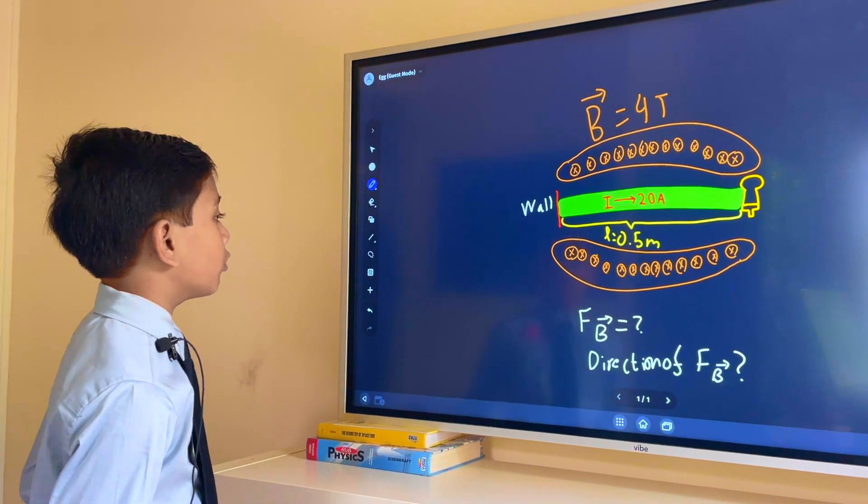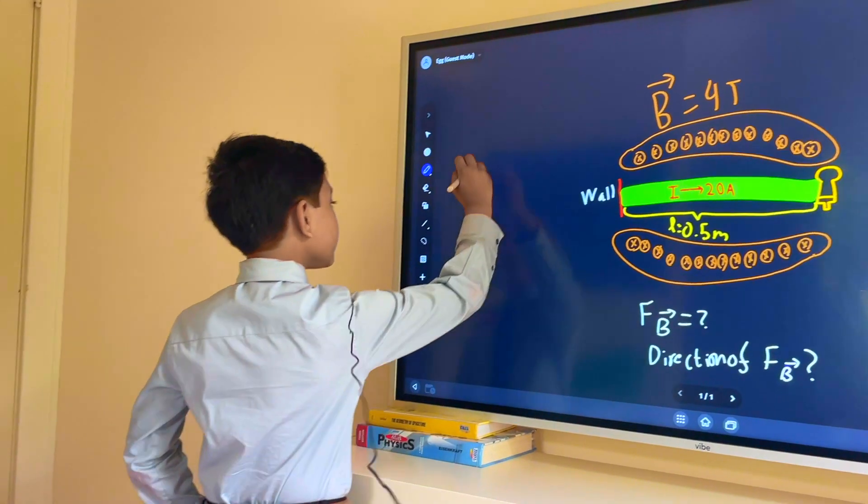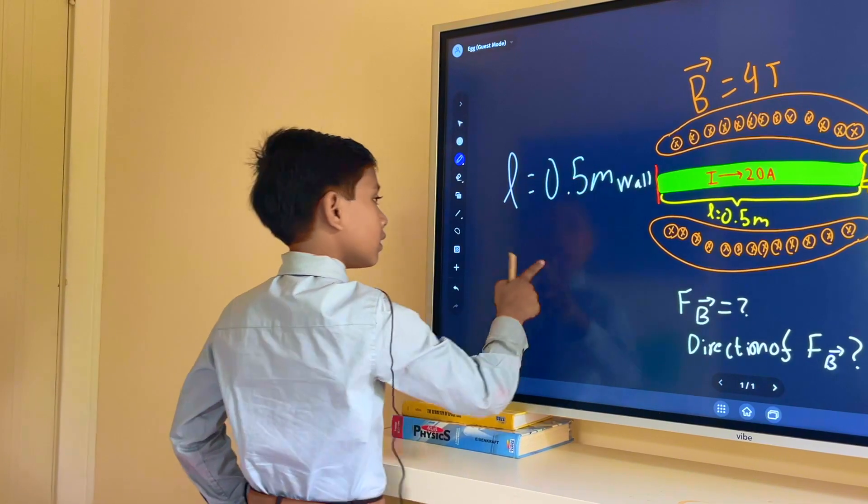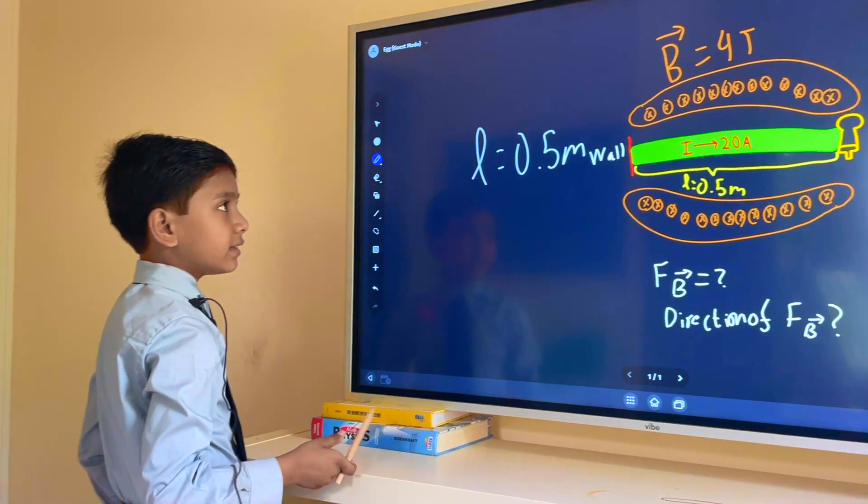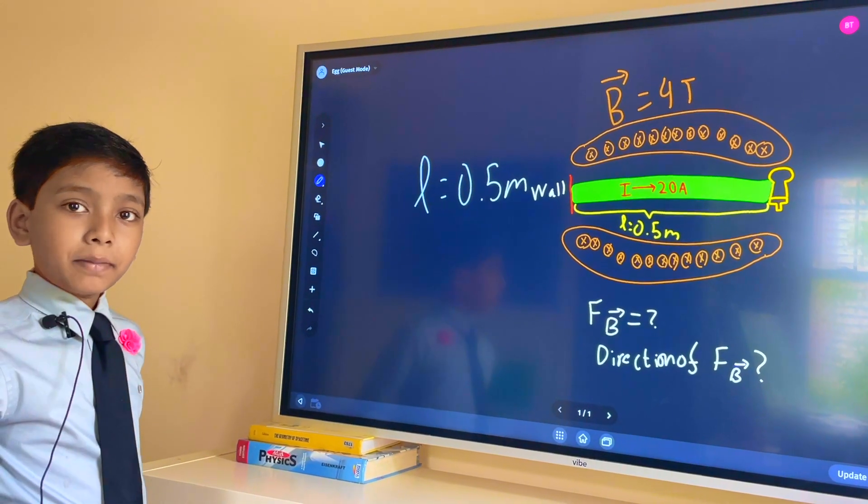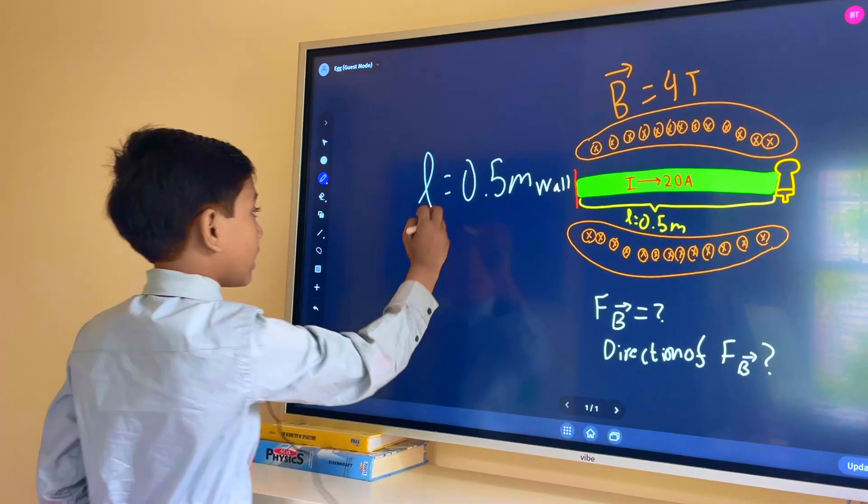So what do we know? Well we know it's seen here that our length is 0.5 meters. We also know that the magnetic field, not to be confused with the magnetic force, they are two different things. The magnetic field is four teslas.